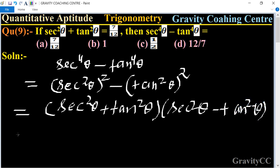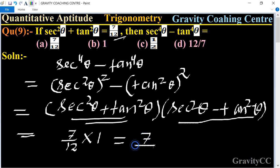Given that sec²θ + tan²θ = 7/12, so we put here 7/12. And the value of the identity sec²θ - tan²θ is equal to 1. So 7/12 times 1 equals 7/12, which is the required answer. So option A is the correct answer.